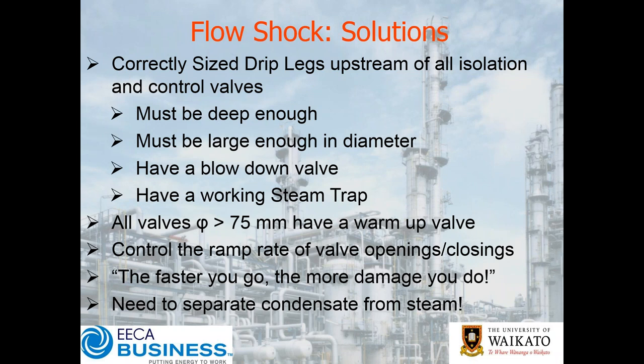What's our solution to eliminate flow shock water hammer? First, we need to correctly size our drip legs upstream of all isolation and control valves. There are really good tables available online through various suppliers that say, if you've got this size steam line, then you should have this size of drip leg — this diameter and this deep. The key thing is that drip leg needs to be deep enough and large enough in diameter so that the condensate doesn't get blown across it — it actually needs to catch the condensate.